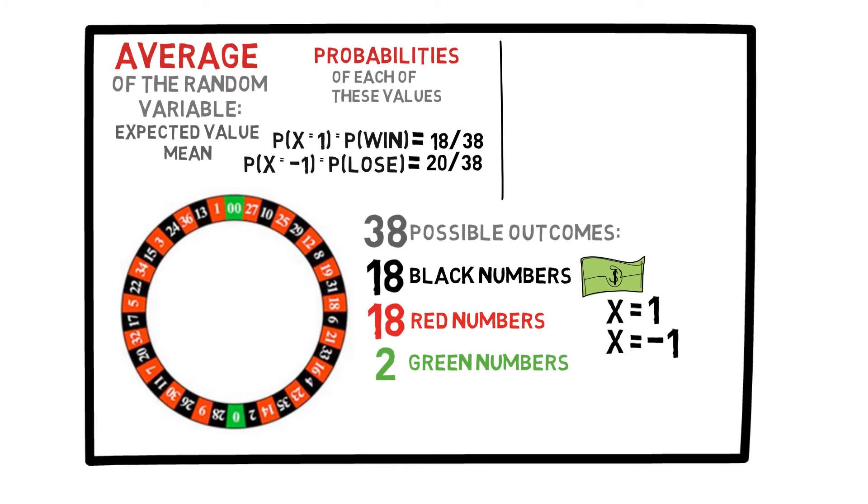Now, let's say you repeat this experiment many times. Say, 38,000 times. Then, what will happen? On average, you would win 18,000 times and lose 20,000 times. So, at the end of the day, your total profit would be 18,000 times 1 plus 20,000 times minus 1, which is negative 2,000.